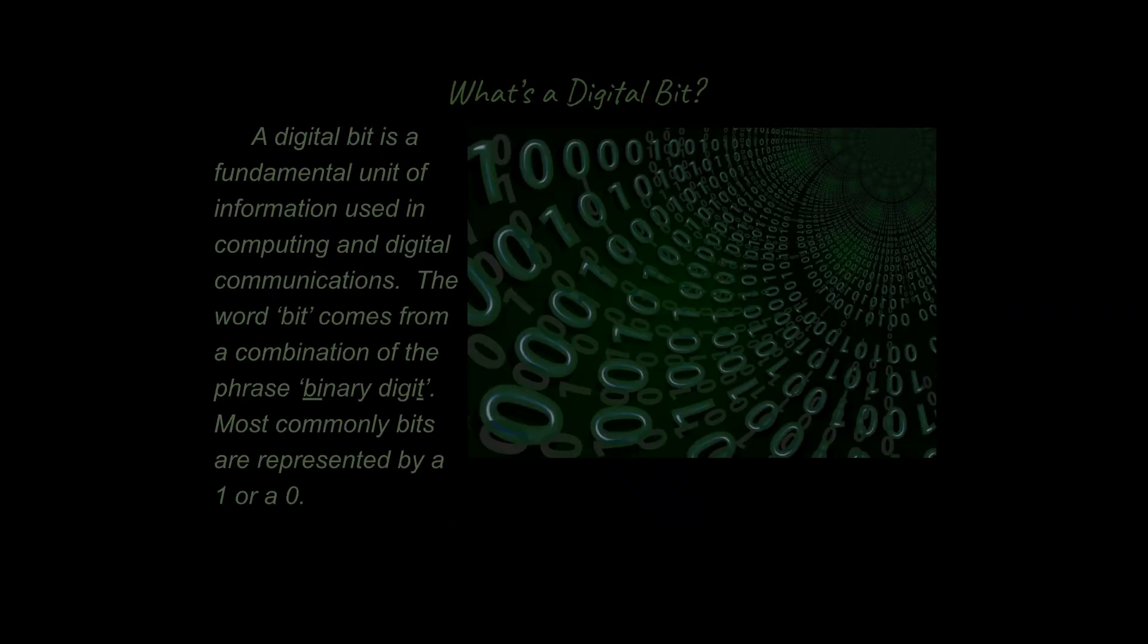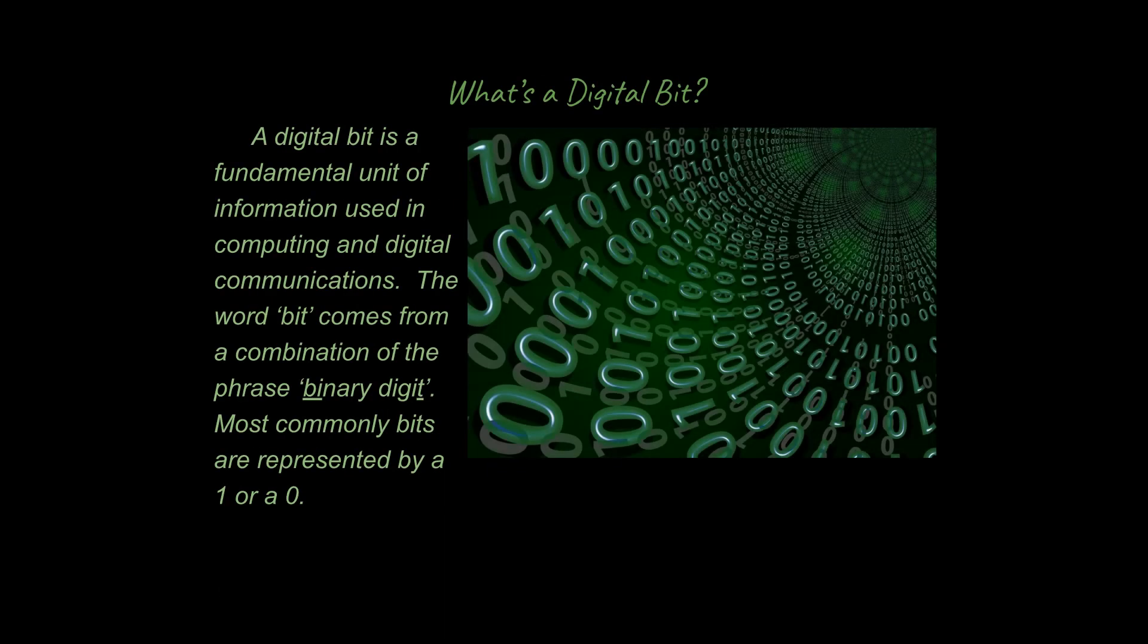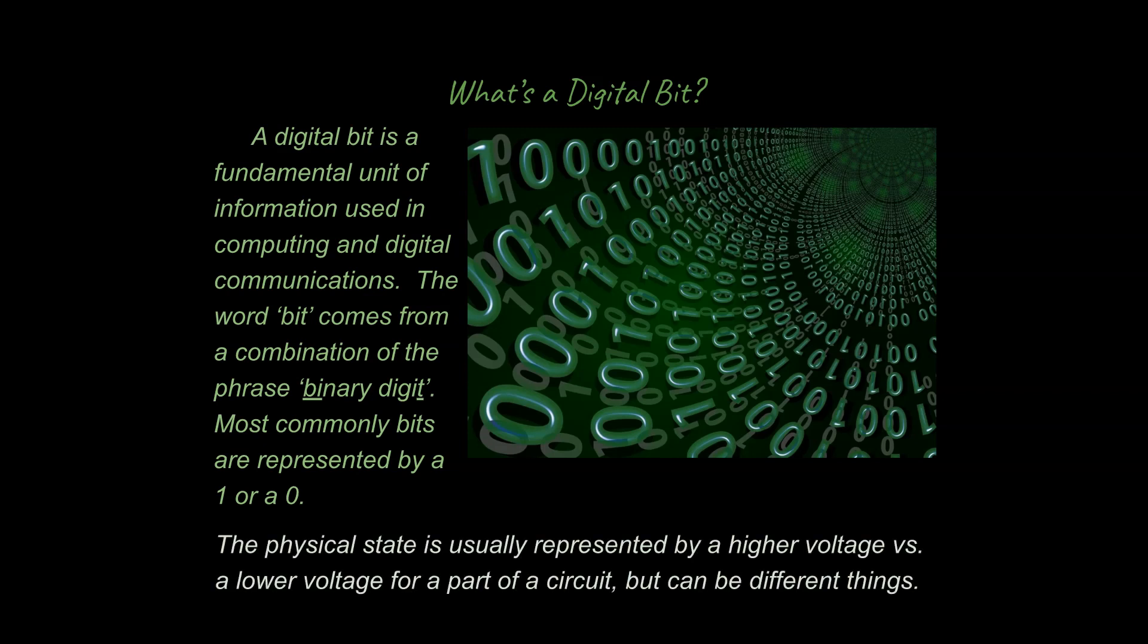So let's go ahead and talk more about what a digital bit is. So a digital bit is a fundamental unit of information. So the word itself bit comes from binary digit, binary meaning one of two options. So we typically represent this as either a one or a zero, or you have a significant voltage, or you don't have a significant voltage. So the ones and zeros can represent different physical states, but once they are converted into ones and zeros, computers can efficiently work with them.